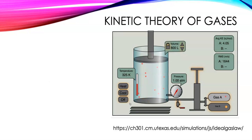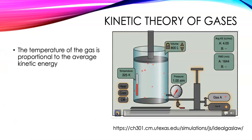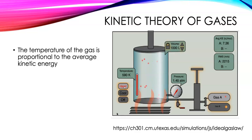Another statement of kinetic theory is that the temperature of the gas is proportional to the average kinetic energy. So that means we're using a Kelvin temperature — right now it's at 325 in our simulation. As we heat it and the temperature goes up, look what happens to the kinetic energy in the top right-hand corner. It increased dramatically.